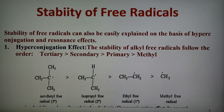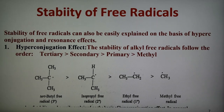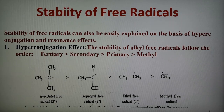Therefore, the tertiary butyl free radical, with 9 alpha hydrogens and hence 9 hyperconjugation structures, is more stable as compared to isopropyl, which has 6 alpha hydrogens and 6 hyperconjugation structures. This is more stable than ethyl free radical, with 3 alpha hydrogens and hence 3 hyperconjugation structures. While methyl free radical has no alpha hydrogen and therefore no hyperconjugation structure, and therefore it is least stable.